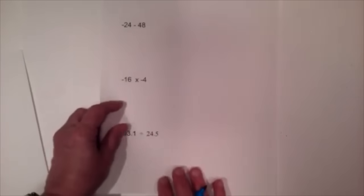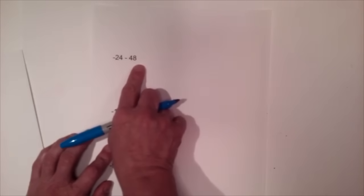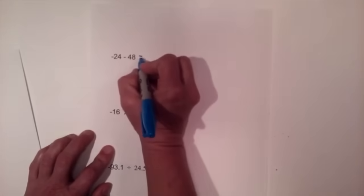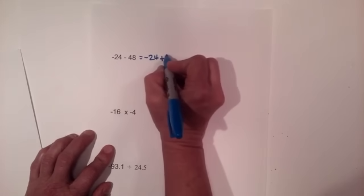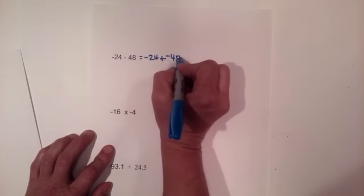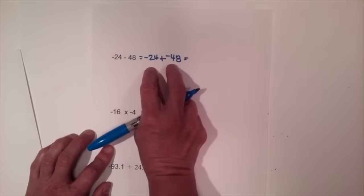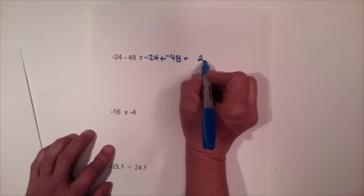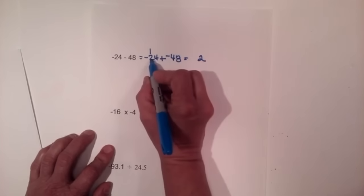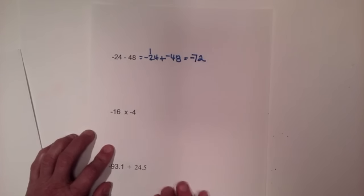Let's try another subtraction problem: negative twenty-four minus a positive forty-eight. I like to rewrite this as addition — negative twenty-four plus a negative forty-eight — so I can apply my addition rules. They're both negatives, so I add and take the sign. Eight plus four is twelve, carry the one; four plus two is six plus one is seven. Carry the sign — that's negative seventy-two.